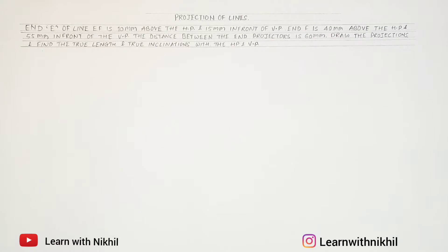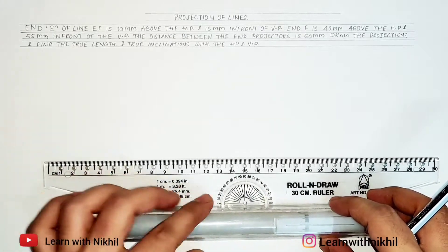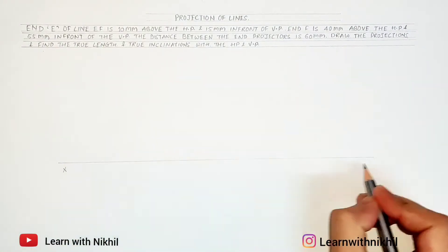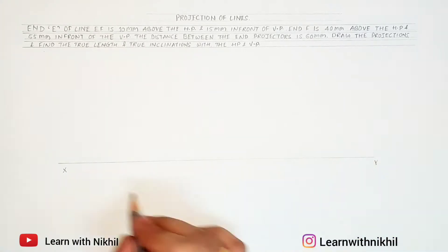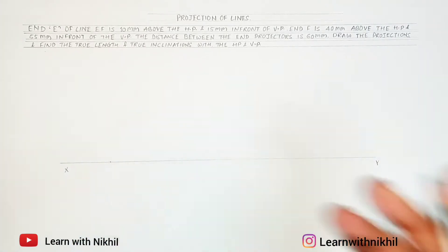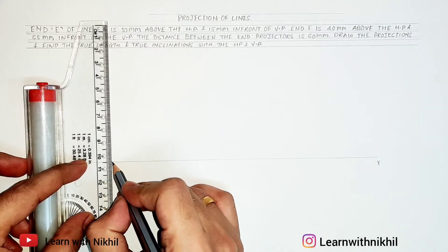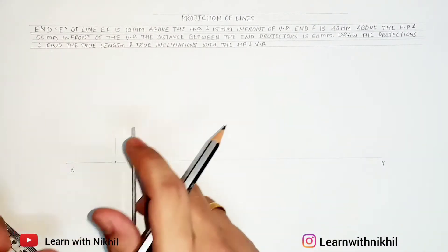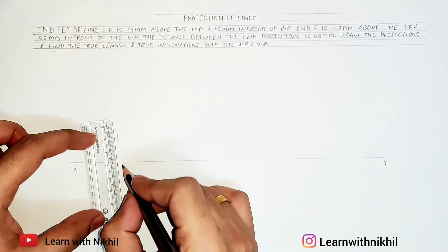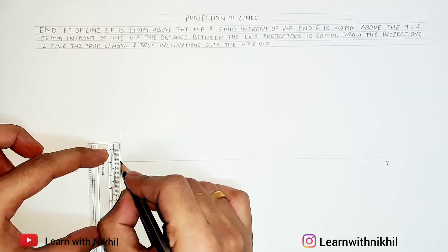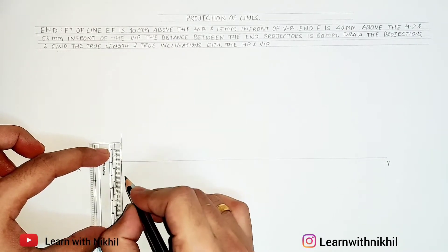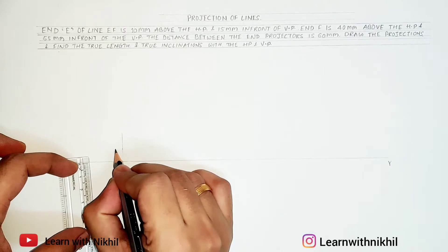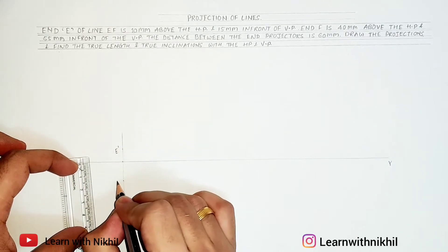Now moving towards our sum. First we will mark the horizontal line, that is the XY line. Above this XY line is the vertical plane where we will draw the front view of the line, and below this will be the horizontal plane where we will draw the top view. Now first we will assume a point and draw a line through it — this will be the line of point E. The E point given is 10 mm above the horizontal plane, so I will mark a point 10 mm above and 15 mm in front of the vertical plane. This will be E dash and this will be E.